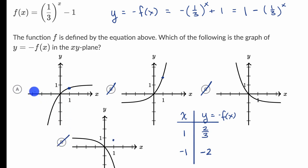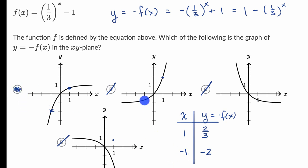A is already looking pretty good. Let's confirm the point (−1, −2). On graph A, negative one maps to negative two — yes, that's there as well, so I'm feeling very good about A. We can also confirm that (−1, −2) does not appear on graphs B, C, or D. So we really like choice A.